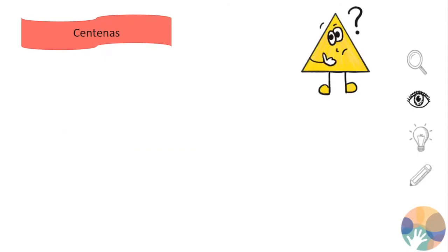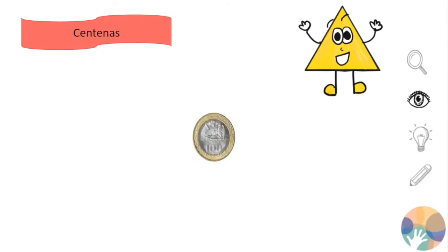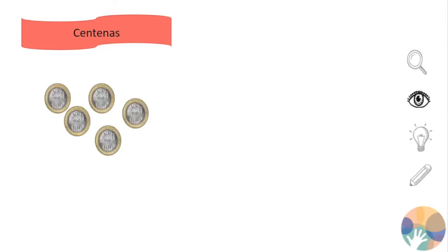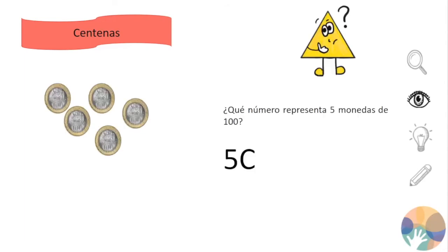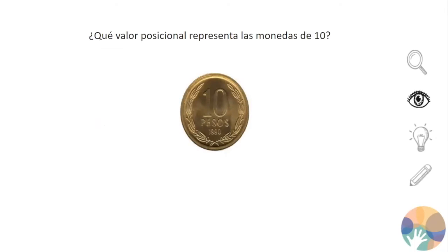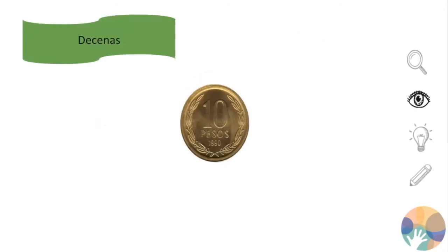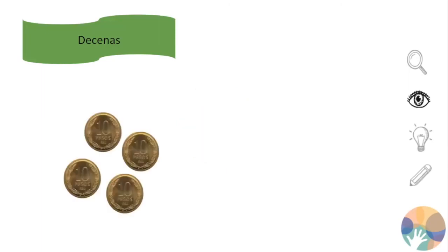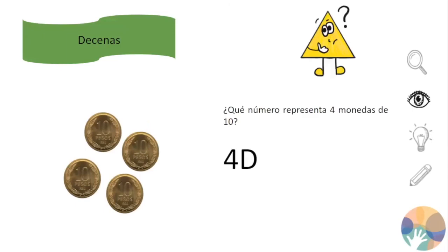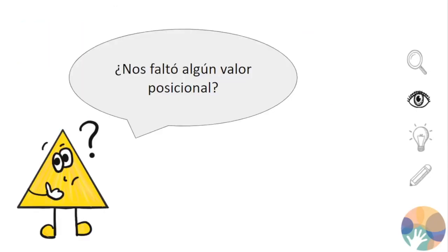Seguiremos con las centenas. La moneda de 100 pesos representa las centenas. Seba tenía 5 monedas de 100 pesos, que representan 500. Nos falta agregar las monedas de 10. Las monedas de 10 pesos representan las decenas. Sebastián tenía 4 monedas de 10 pesos, que representan 40.